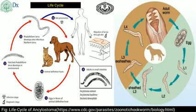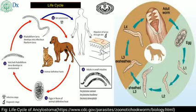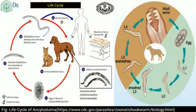The unembryonated eggs are voided in the feces. Embryonation of the egg occurs under environmental conditions and development of L1 larvae occurs inside the egg shell. It then hatches, and the rhabditiform larvae (L2) develop in the environment. Then the rhabditiform larvae develop into infective filariform larvae (L3) under environmental conditions, and these can infect the definitive host either by skin penetration or through the oral route.